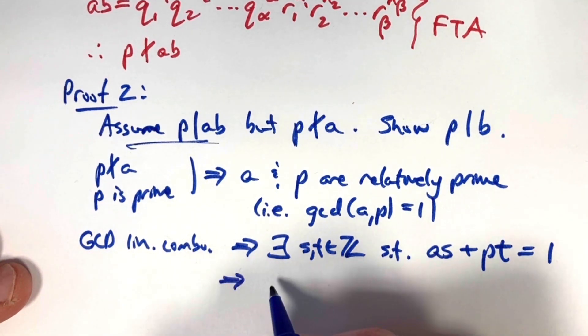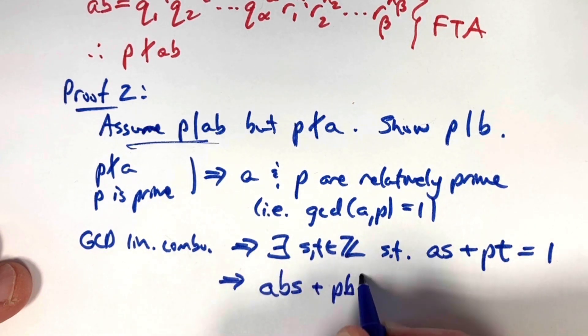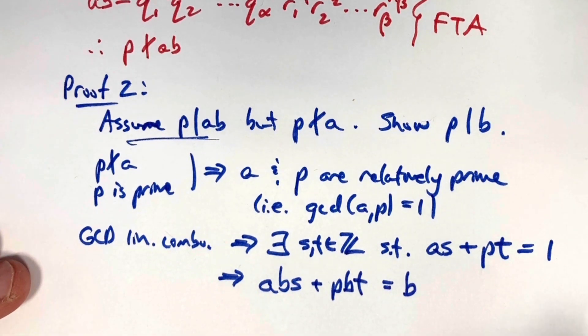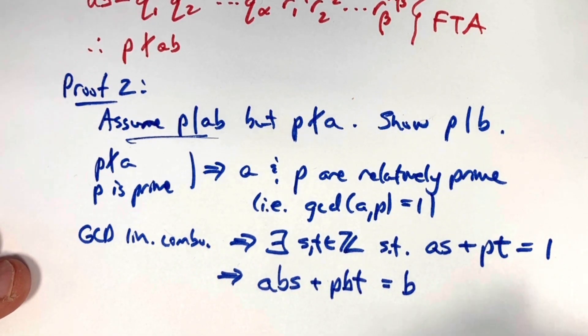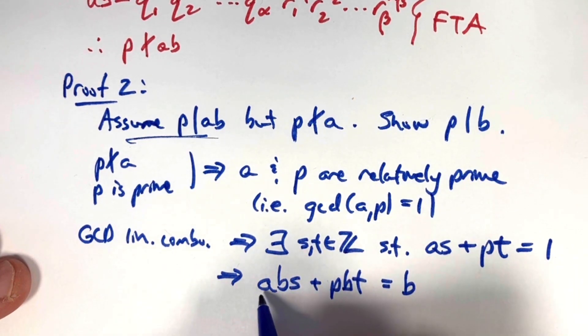That's the step that you do next. To multiply everything by b, you'll get a b s plus p b t equals b. We want to show p divides b. p definitely divides p times b times t, because there's a p there, and p does divide this, because we're assuming it divides a times b.